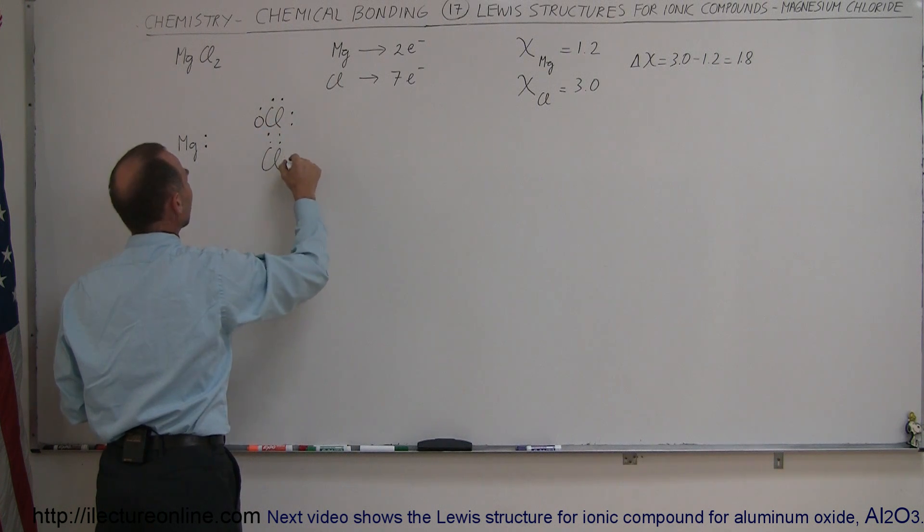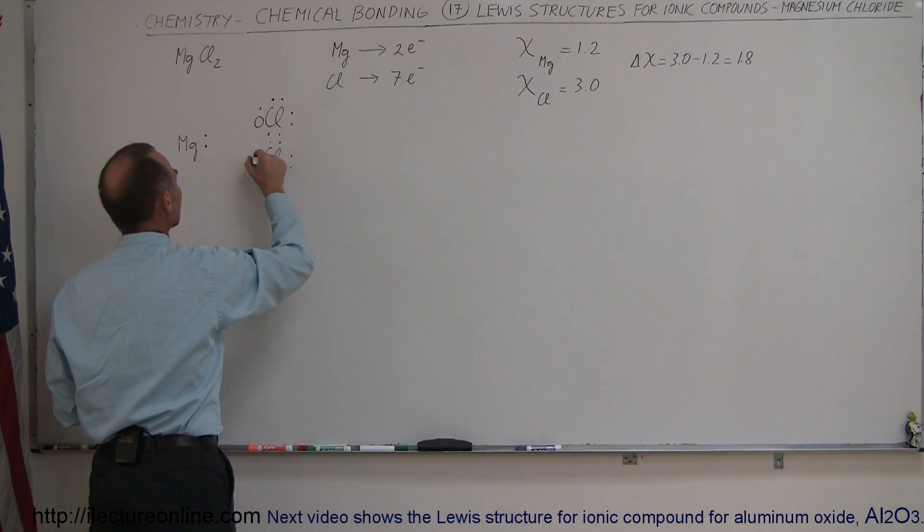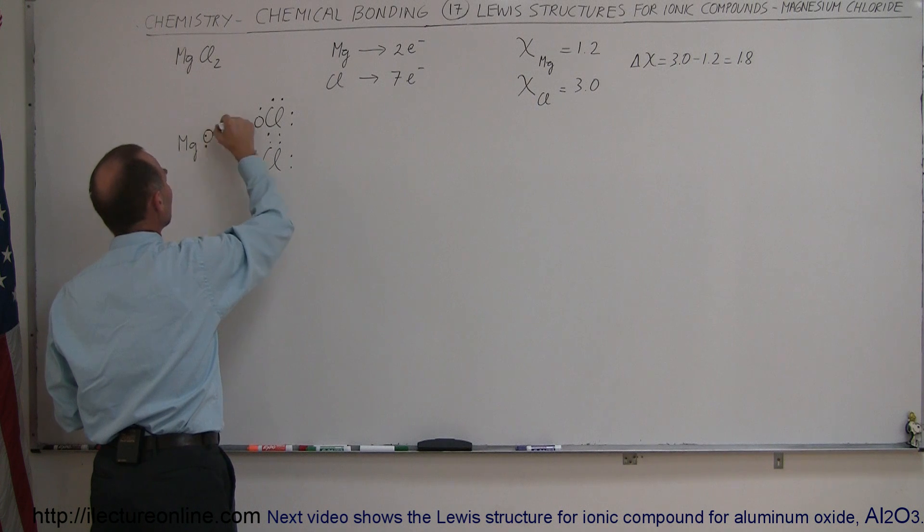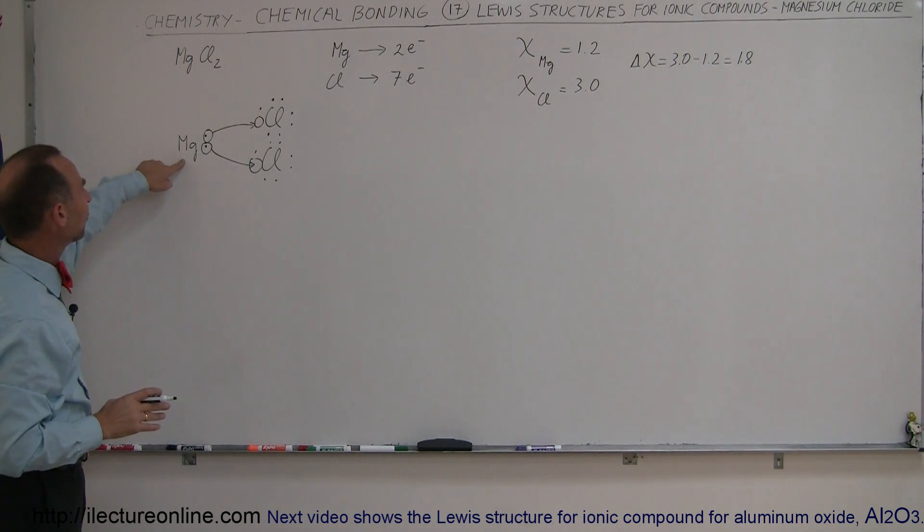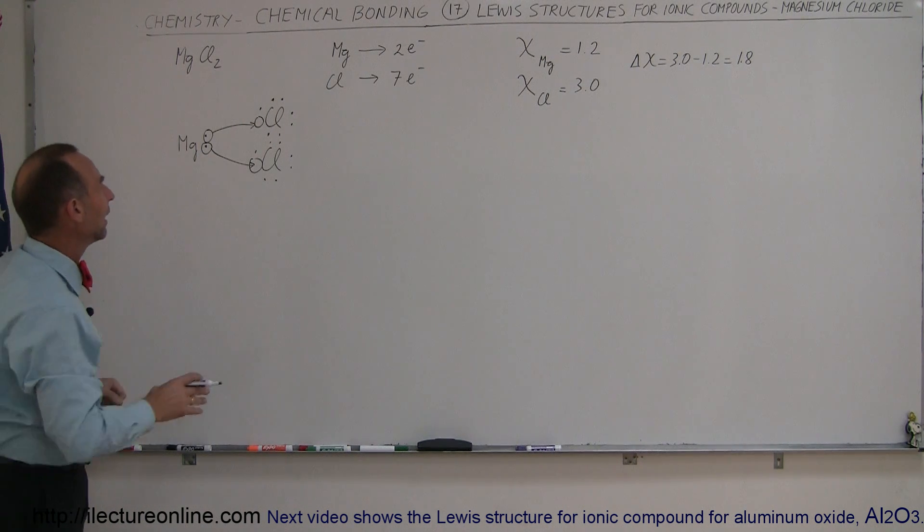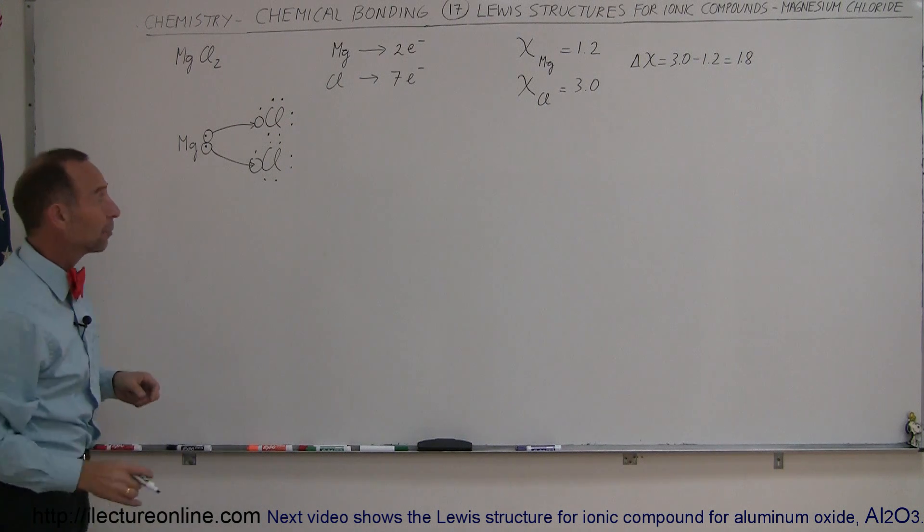And here we have another chlorine atom with seven valence electrons, which means there's room for that. So each of these electrons will be donated to each of the chlorine atoms, forming a positive two-charge magnesium ion and two negative one-charge chlorine atoms.